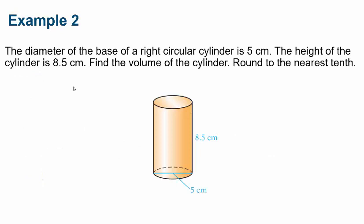All right, let's do an application problem here. The diameter of the base of a right circular cylinder here is 5 centimeters. The height of the cylinder is 8.5 centimeters. Find the volume of the cylinder.